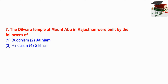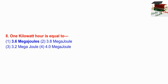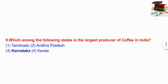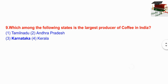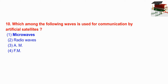The Dilwara temples at Mount Abu in Rajasthan were built by the followers of Jainism. Next question: one kilowatt-hour is equal to how many joules? The right answer is 3.6 megajoules. Next question: which among the following states is the largest producer of coffee in India? The right answer is Karnataka.